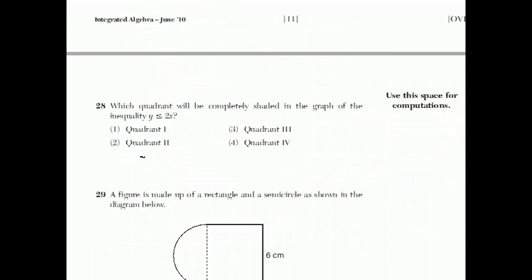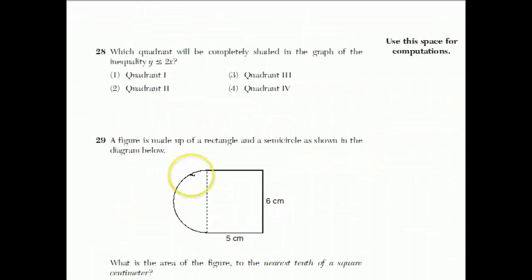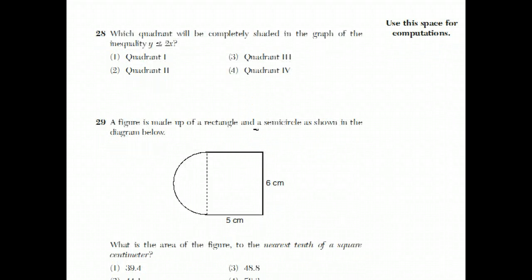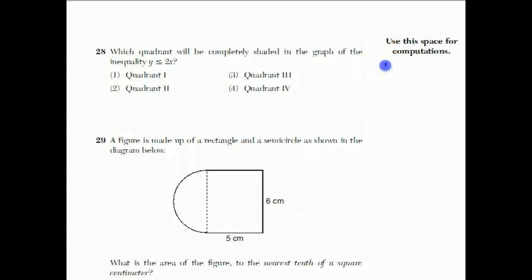Question number 28. Which quadrant will be completely shaded in the graph of the inequality y is less than 2x? Well, the way you graph an inequality is first you graph y equals 2x. y equals 2x is a line with y-intercept of 0 and slope of 2. Now, this isn't the answer to the question. They want when is y less than or equal to 2x.